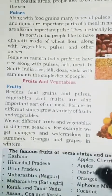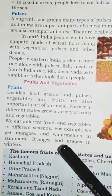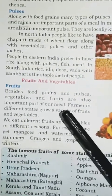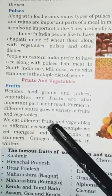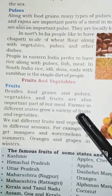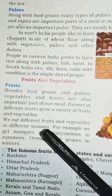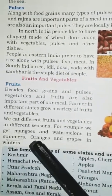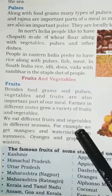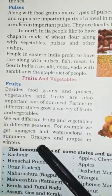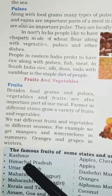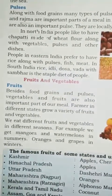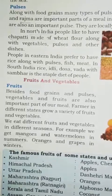Then, fruits and vegetables. Besides food grains and pulses, vegetables and fruits are also an important part of our meal. Farmers in different states grow a variety of fruits and vegetables. We eat different fruits and vegetables in different seasons — for example, we eat mangoes and watermelons in summers, and mangoes and grapes in winters.